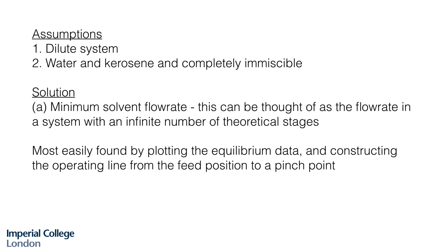Some quick assumptions. We are going to assume that it's a dilute system and that water and kerosene are completely immiscible. The solution, part A, is to calculate the minimum solvent flow rate. This is very easily done graphically and we can think of it as the flow rate in a system where there is an infinite number of theoretical stages. As you increase the number of theoretical stages in these separations, you decrease the solvent flow rate. That would correspond to the minimum solvent flow rate. And we will do that graphically.